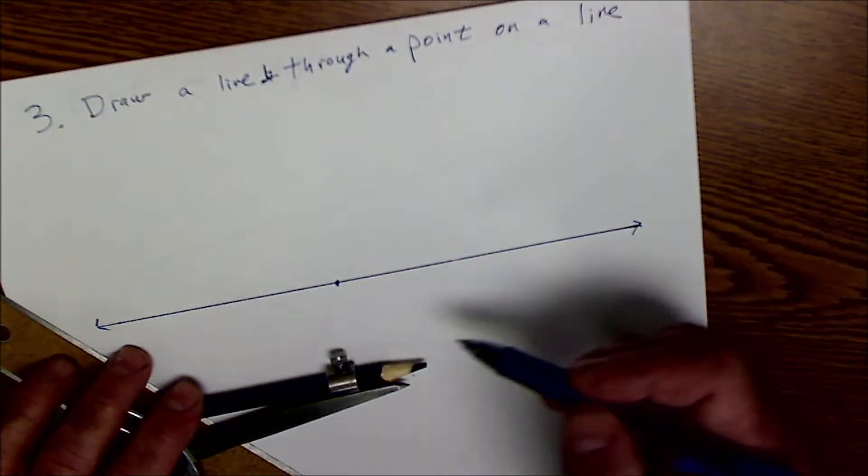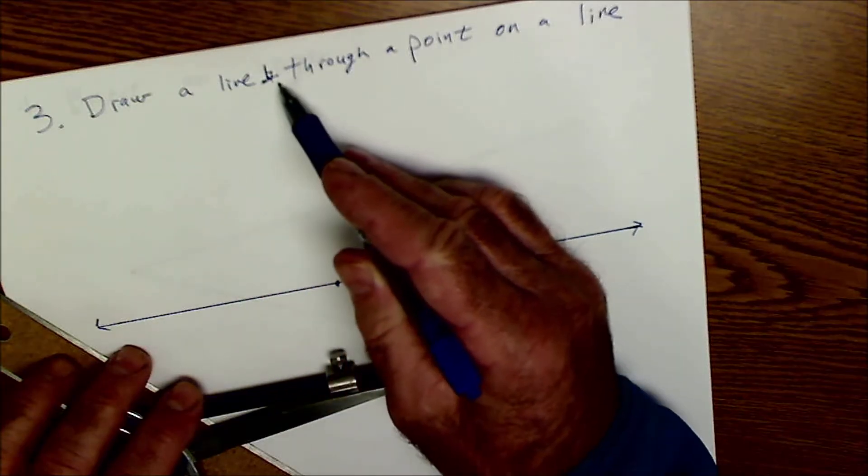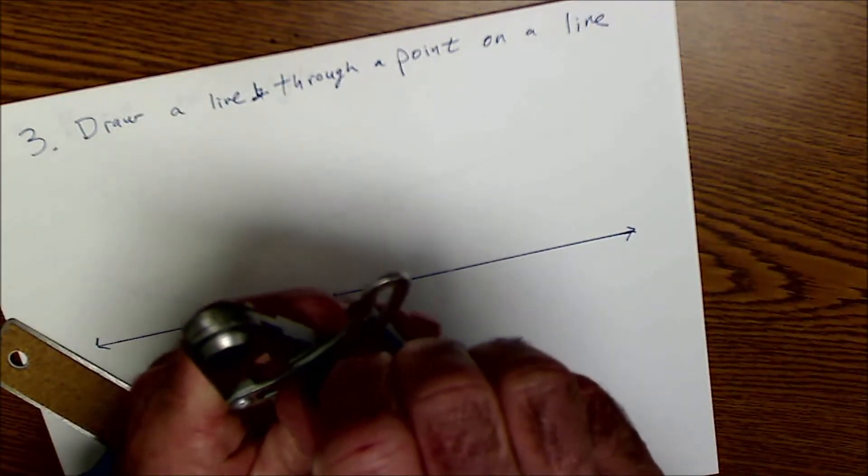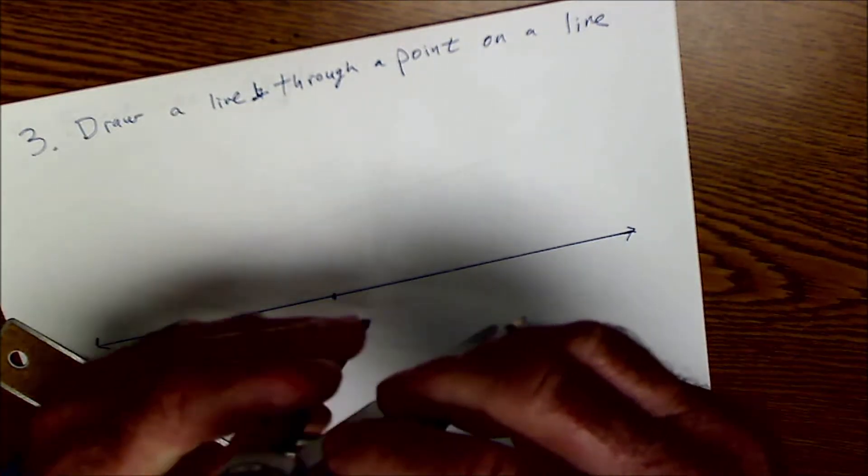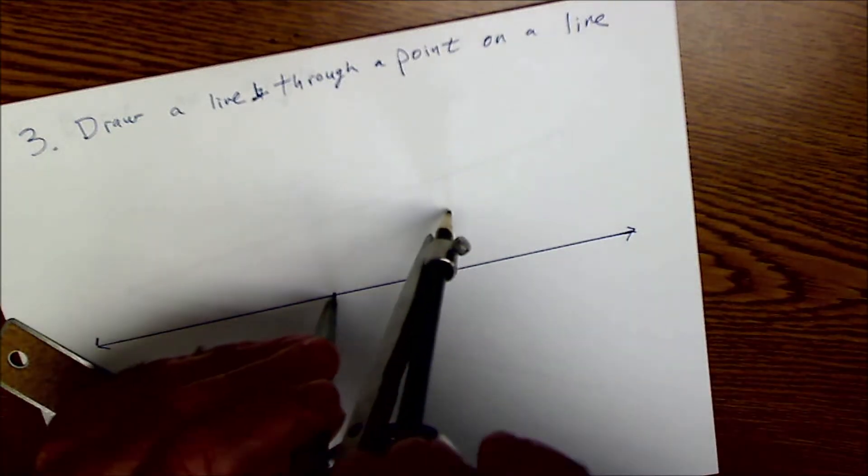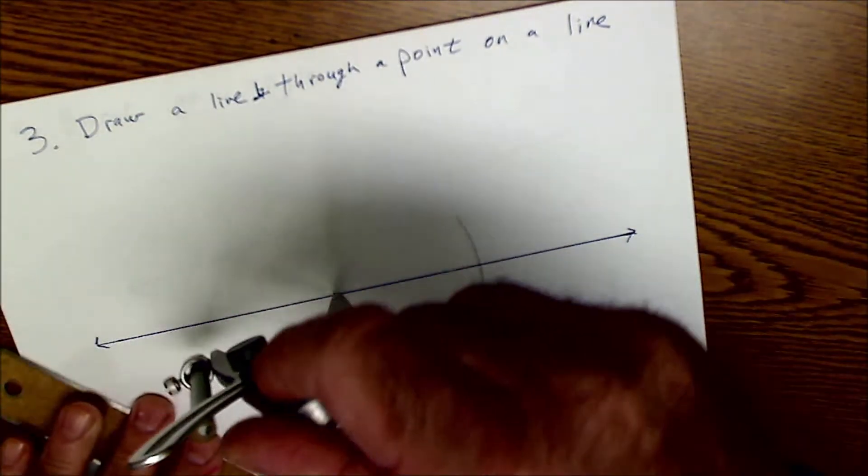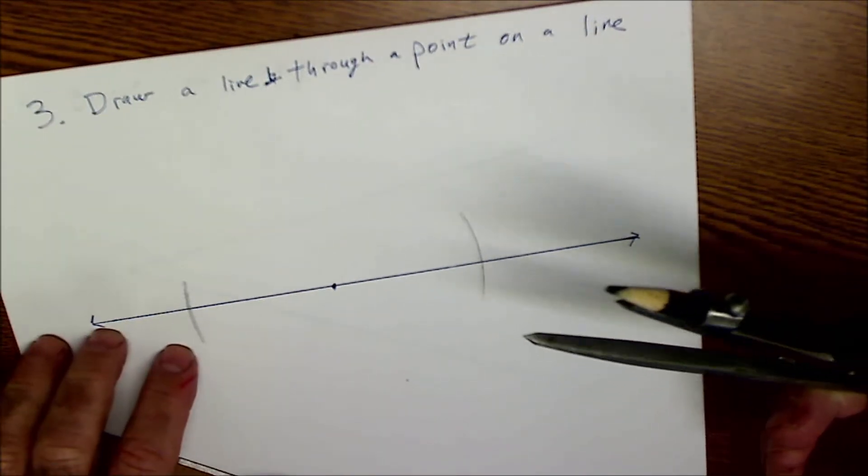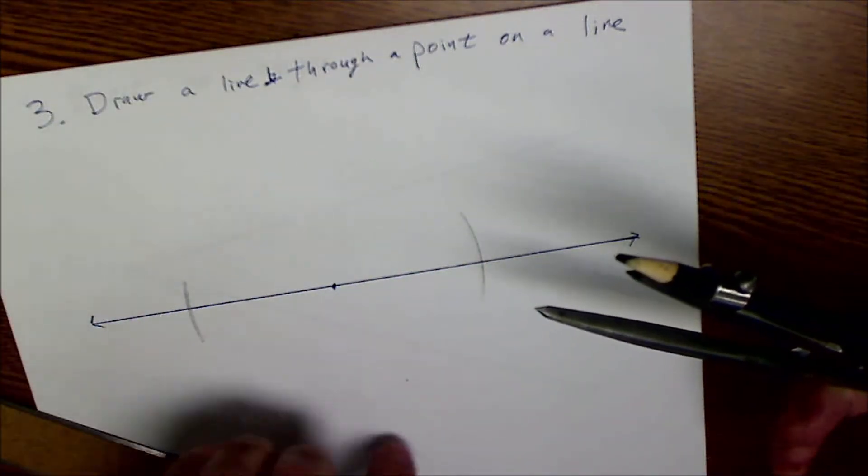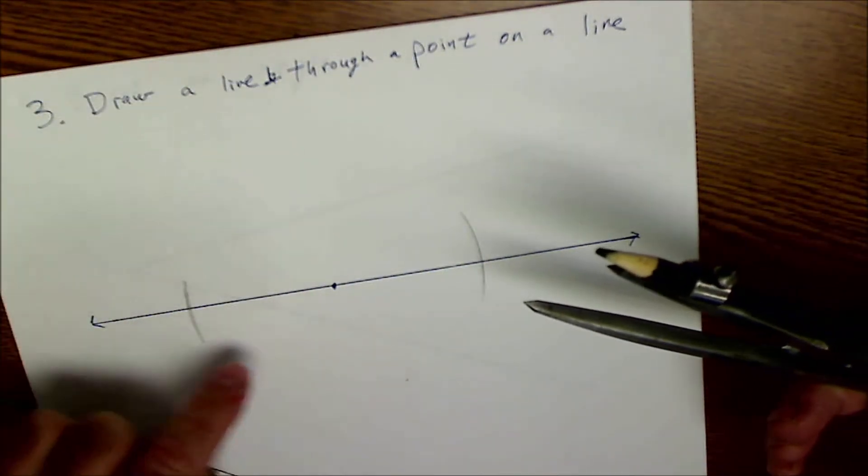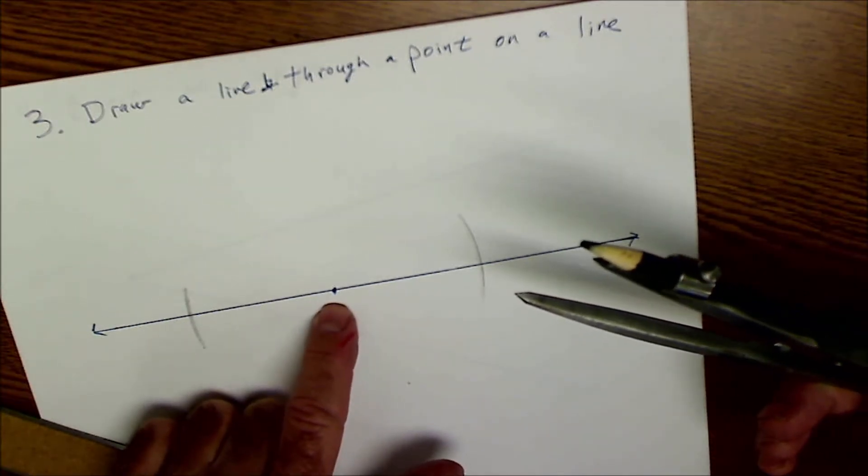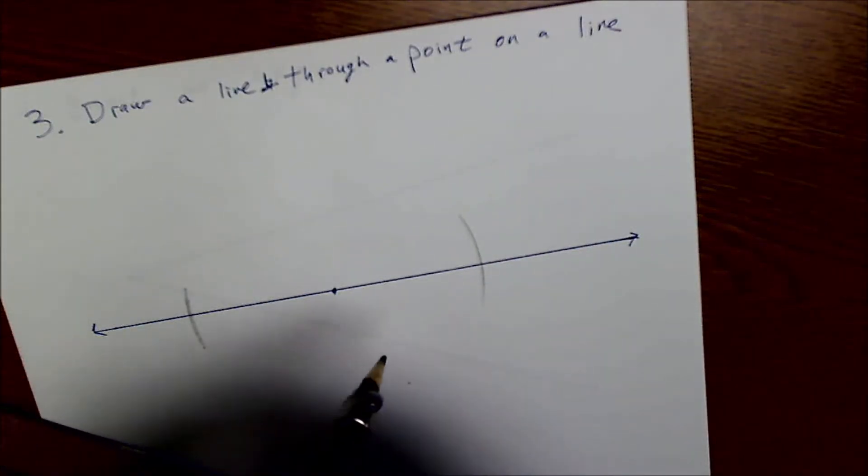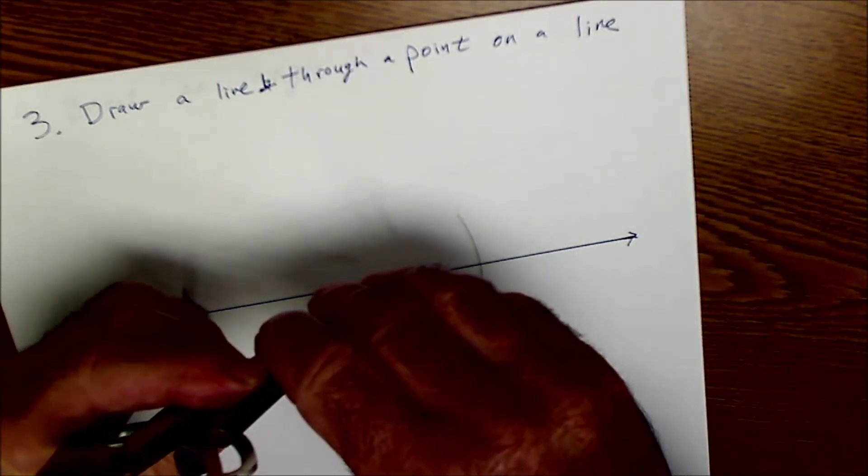So number three, I have a line with a point on it and I want to draw a line perpendicular through a point on that line. So the way I do that is I open my compass up to a certain amount and set it and I find points equal distance from that point on the line. So that point and that point where they intersect are points equal distance from that given point. And it kind of makes sense because the circle is all points equal distance from a given point. So now I have these two points equal distance from the